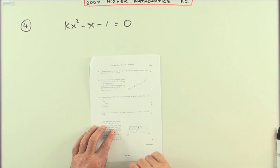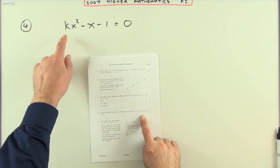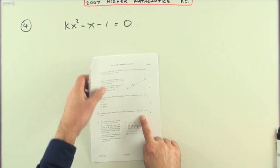Number four, roots of a quadratic. Find the range of values of k such that this equation has no real roots.